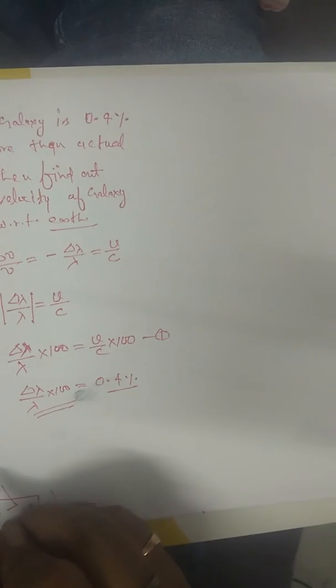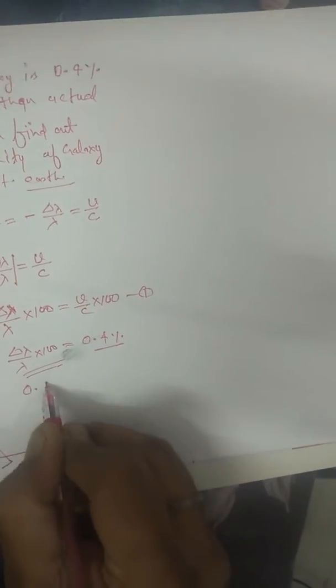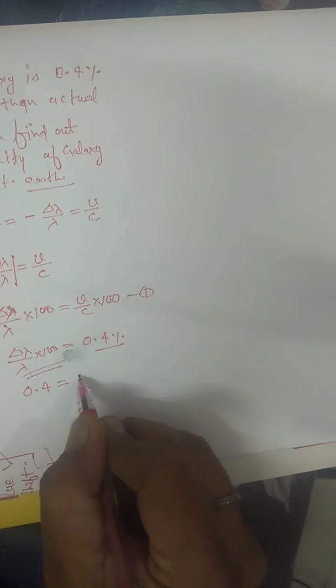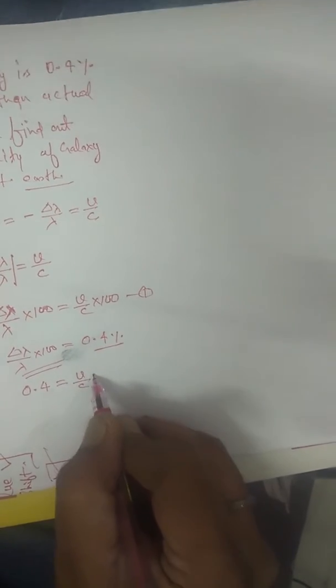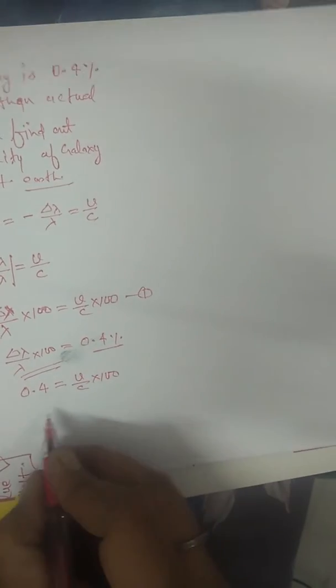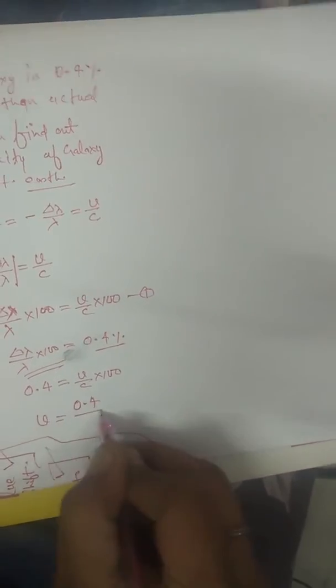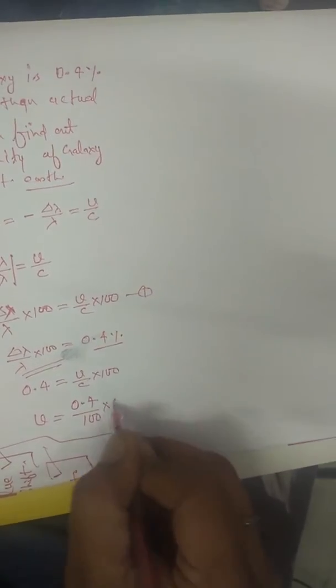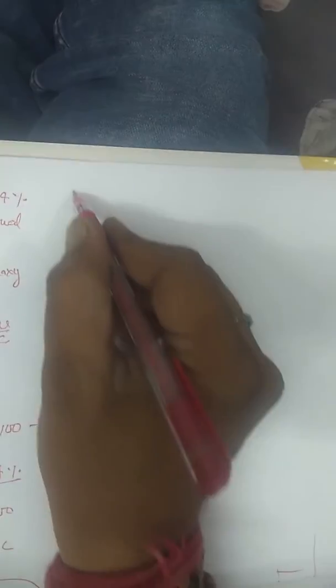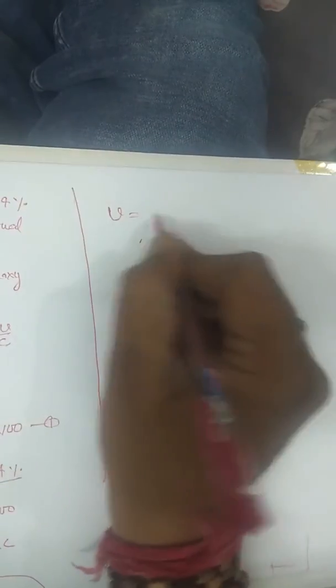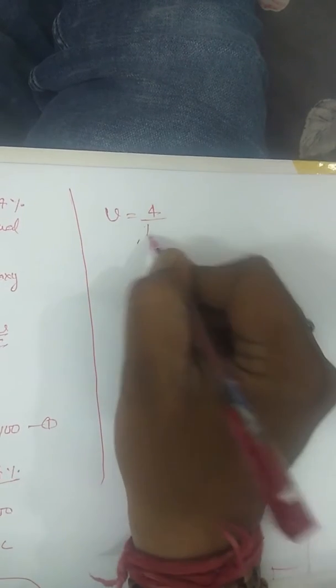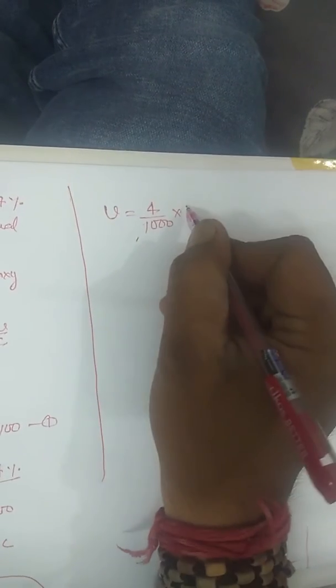So this 0.4 is equals to v upon c into 100. So v will become equals to 0.4 by 100 into c. So it is v equals to 4 by 1000 into c.